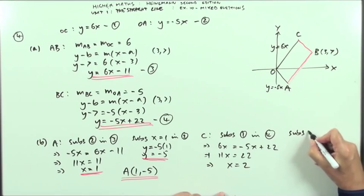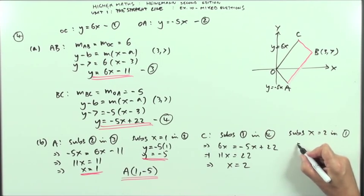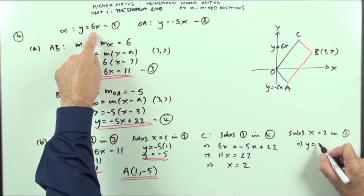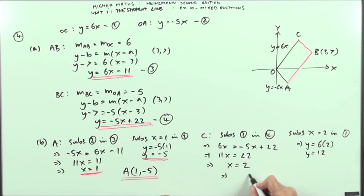Then substitute X equals 2 into equation 1 which means that Y is going to equal 6 times 2, so Y is equal to 12, which means that C is going to be the point (2, 12).